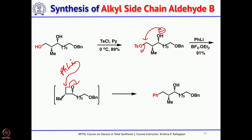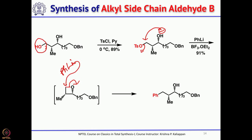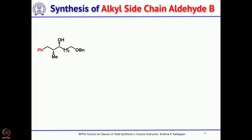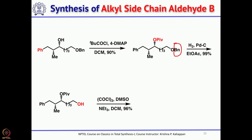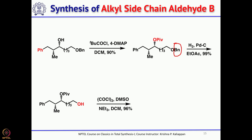The hydroxyl group is converted to a good leaving group and then replaced by phenyl in the presence of a Lewis acid. The hydroxyl group is then protected as a pivalate ester, the benzyl group removed by hydrogenolysis to release the primary alcohol, and Swern oxidation gives the primary aldehyde — the side chain aldehyde fragment B.